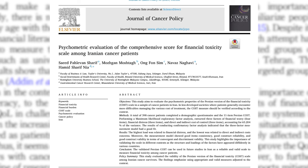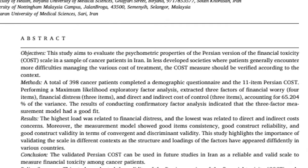You can also validate constructs that have already been developed in a new context. For example, as seen in our paper published in Journal of Cancer Policy, we assessed the psychometric properties of the Persian version of the financial toxicity scale in a sample of cancer patients in Iran. We explained that in less developed societies, where patients generally experience more difficulties managing their various costs of treatment, these measures should be verified according to the context.